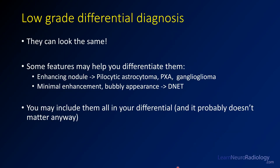In general, when making a differential diagnosis for these low-grade tumors, remember they can look the same. A few features can help differentiate: an enhancing nodule favors pilocytic astrocytoma, PXA, or ganglioglioma; a minimal-enhancement bubbly appearance favors DNET. In reality, you may include all of them in your differential, and it probably doesn't matter because the treatment for all is surgical resection. They all have relatively good outcomes, and the workup will lead to the appropriate clinical treatment.